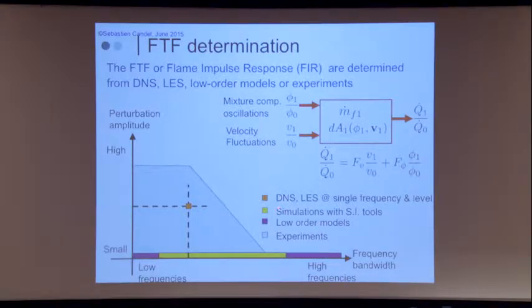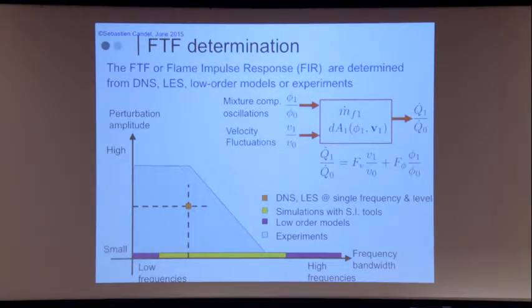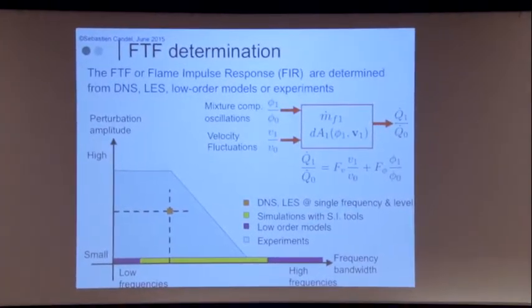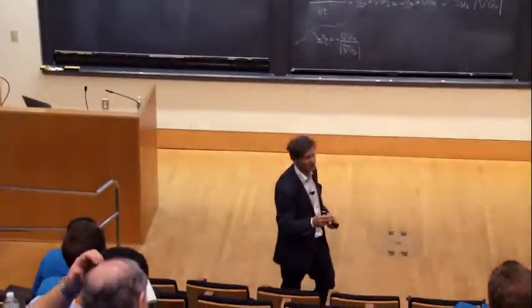How do you get these transfer functions? You could use DNS — for example, for equivalence ratio perturbations of flames we've used DNS. You can use LES for turbulent flames. But this is expensive in terms of computational time and can run into many hours. We've just done a calculation of one million hours.